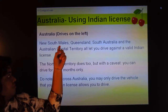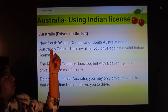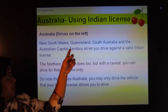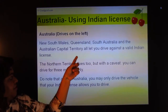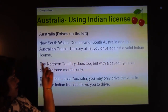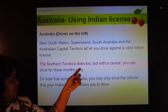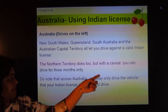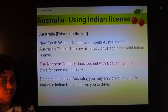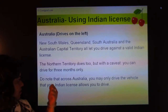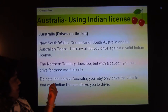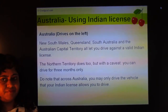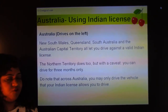Australia drives on the left. New South Wales, Queensland, South Australia, and the Australian Capital Territory all let you drive on a valid Indian license. The Northern Territory allows it too, but for three months only, so it varies from state to state. Note that across Australia you may only drive the class of vehicle that your Indian license permits — that applies to all countries.